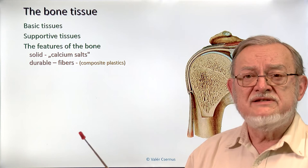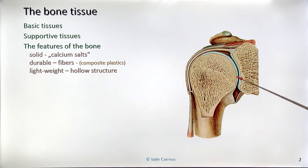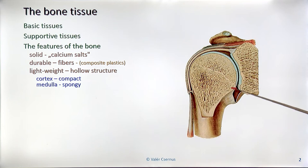You probably remember fiberglass embedded in plastic, from which even car bodies are made — it's very stable. The weight of bones is lighter than it would be if solid, because it has a hollow structure. On the outer surface, the cortical area is compact — a thick, stable bone that protects the sensitive inner part — while the medullary part is spongy, to reduce weight without sacrificing strength.